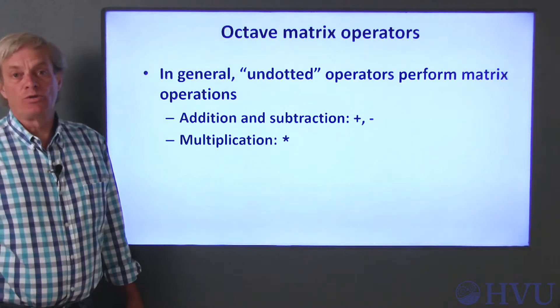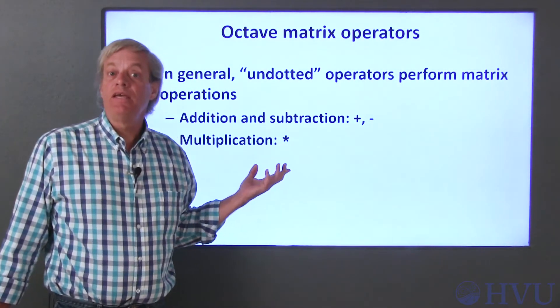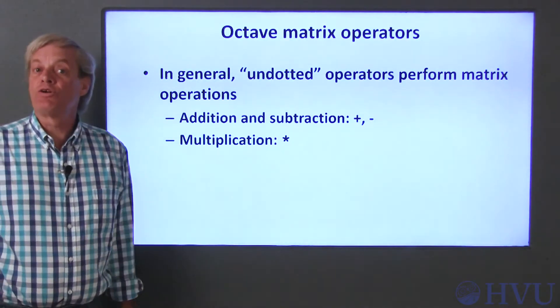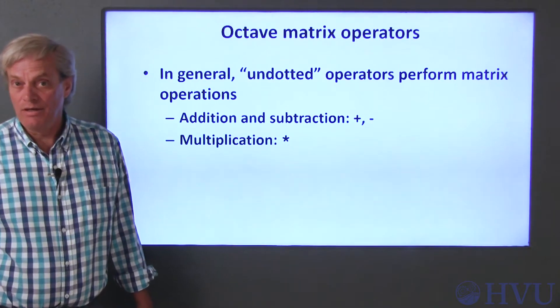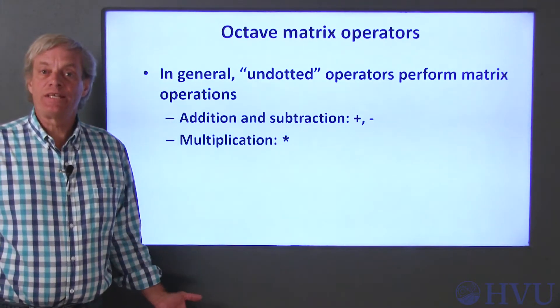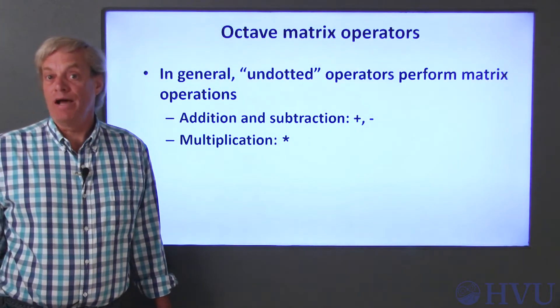Multiplication of matrices according to the rules of linear algebra is done with an asterisk symbol. In matrix multiplication, the inner matrix dimensions must match, unless one of the operands is a scalar. In multiplication between a scalar and a matrix, each element in the matrix is multiplied by the scalar.